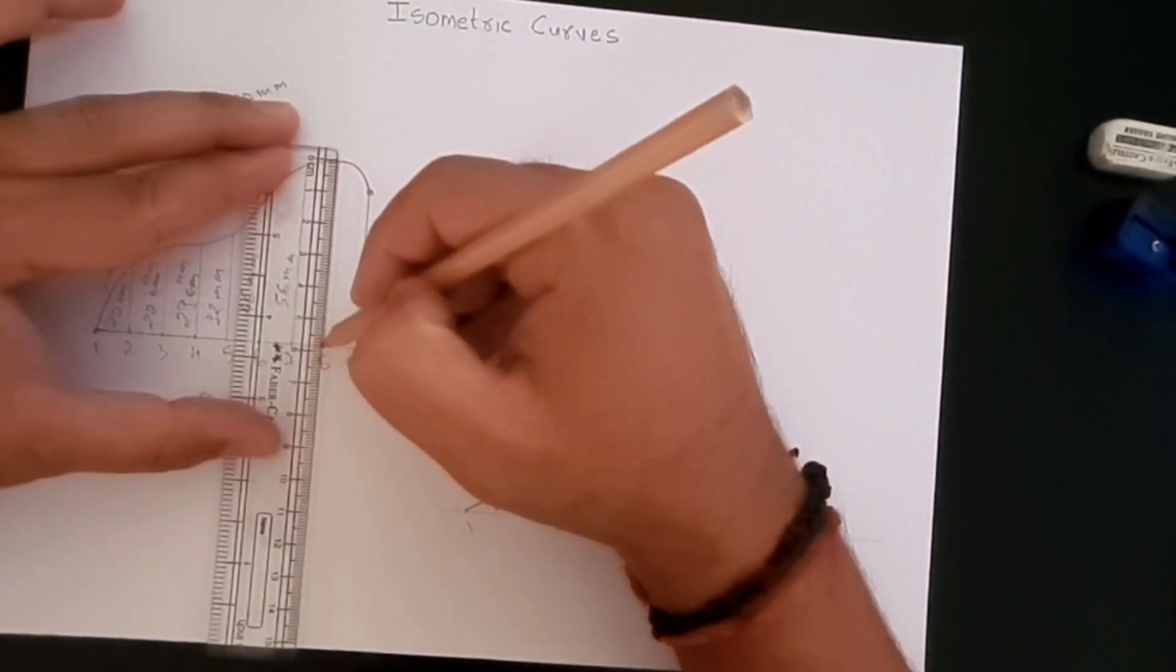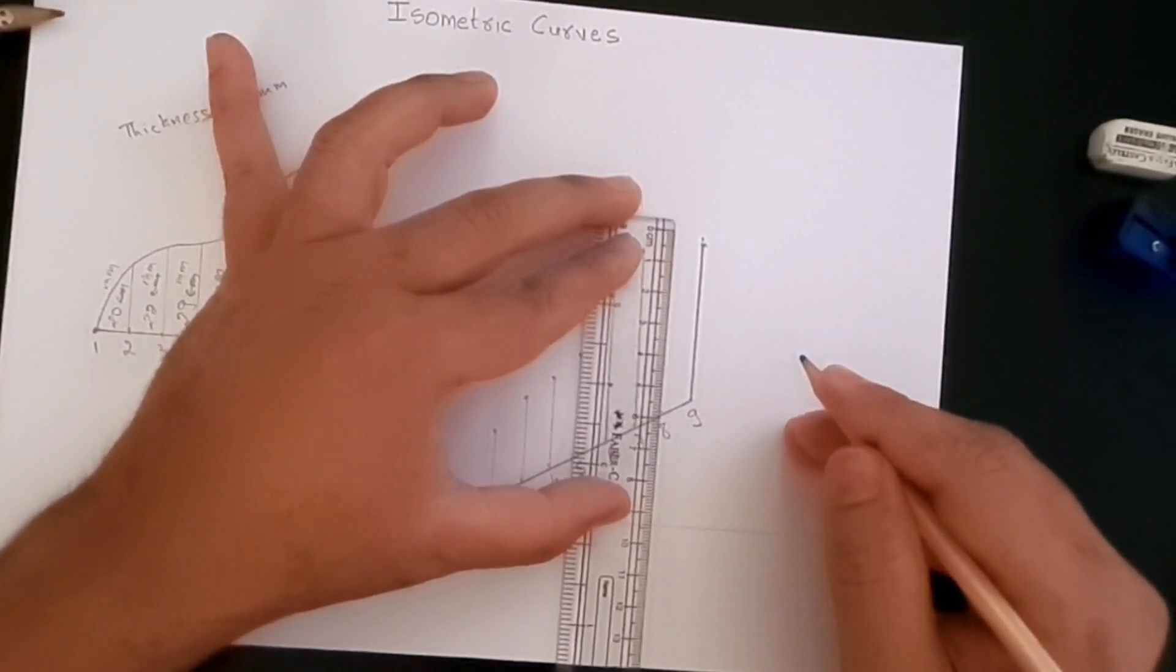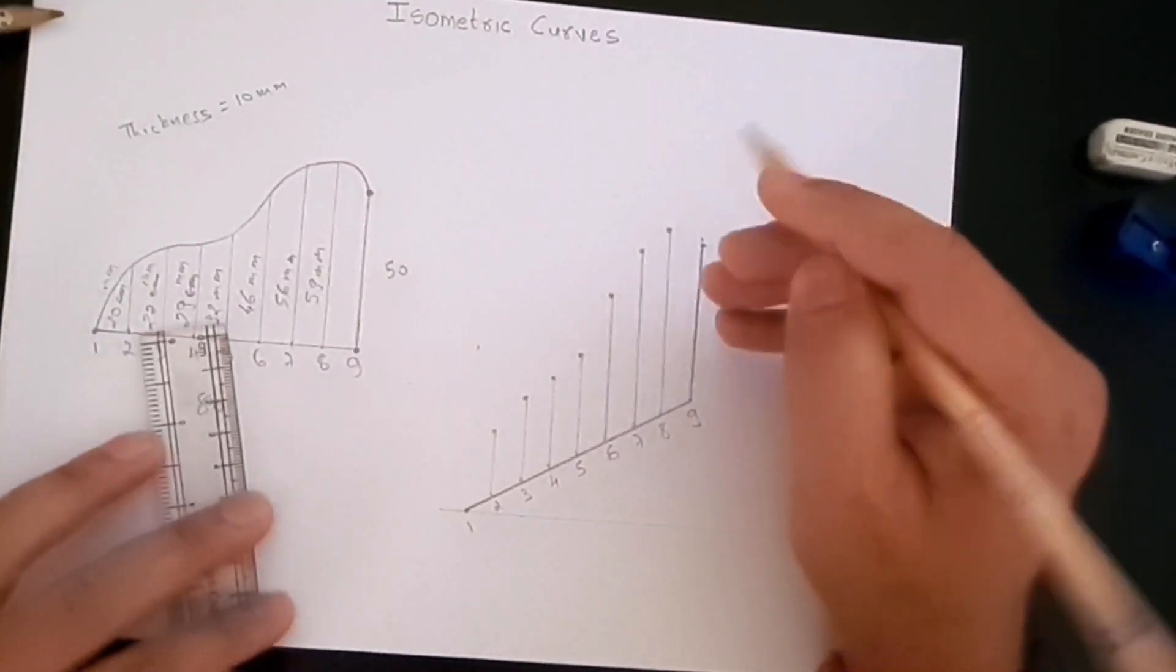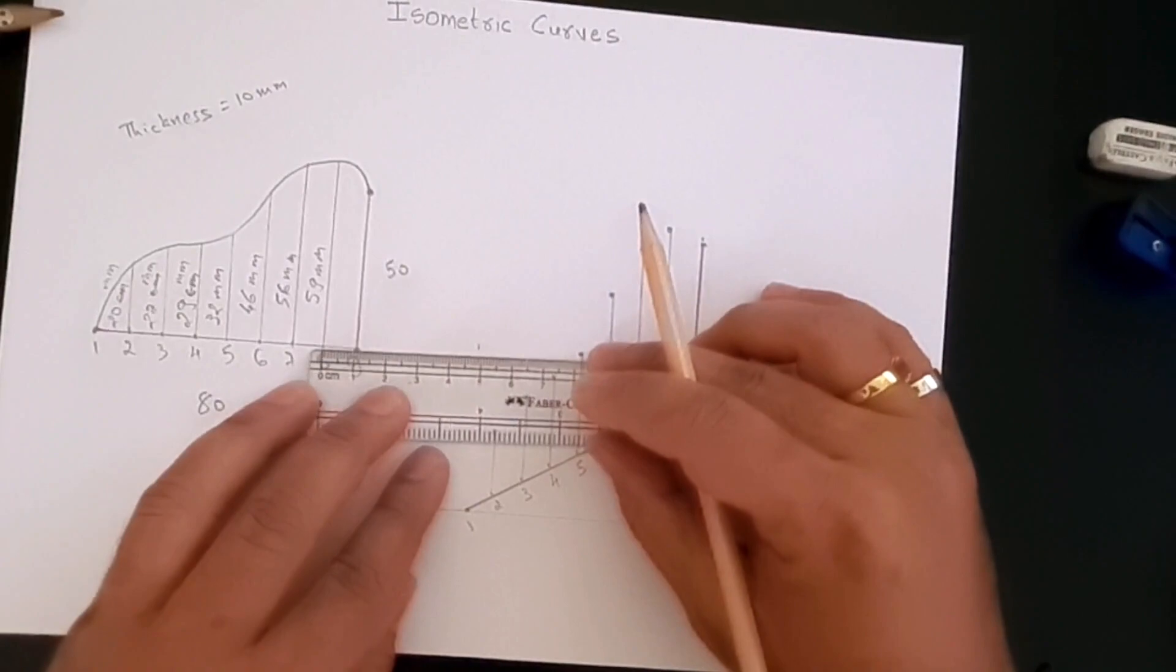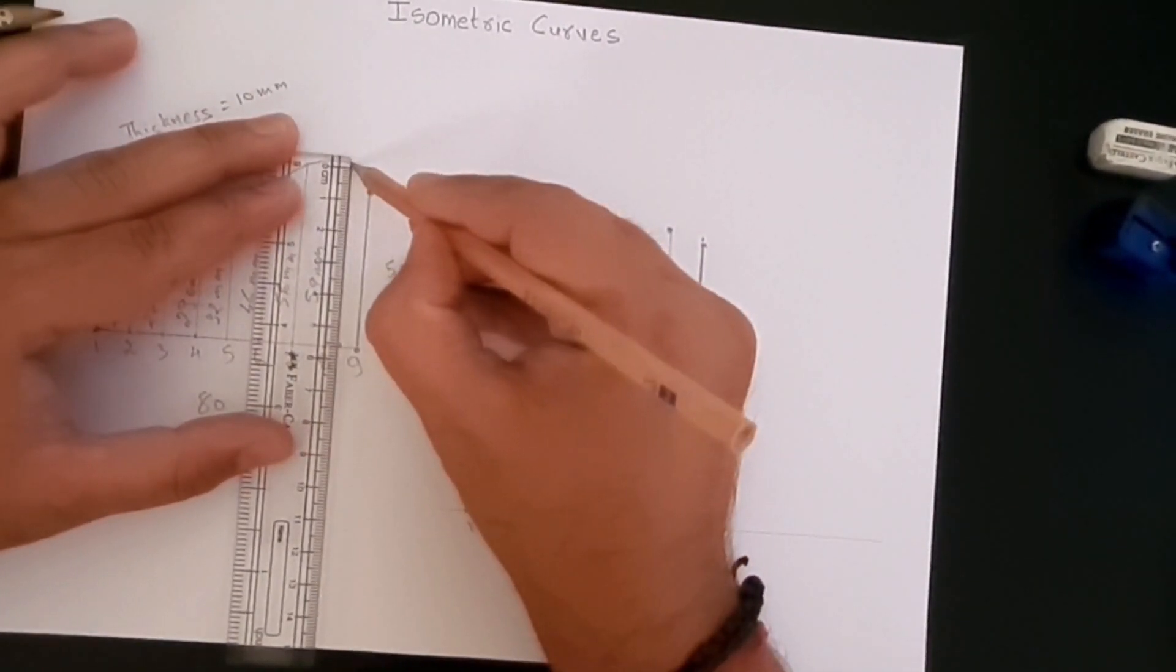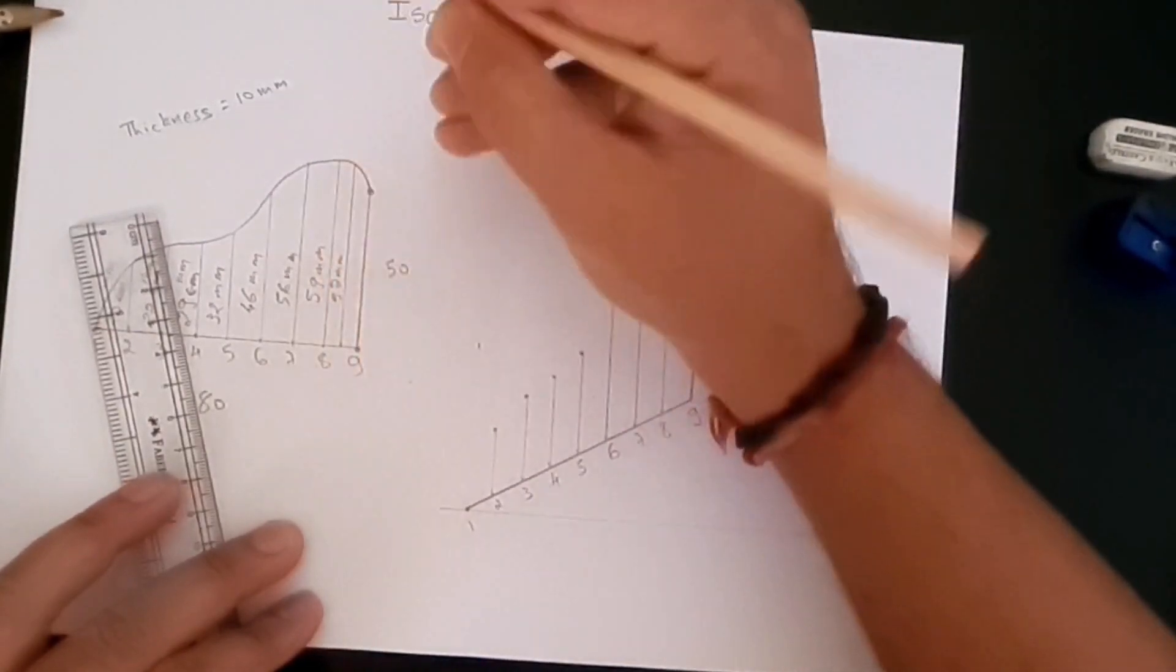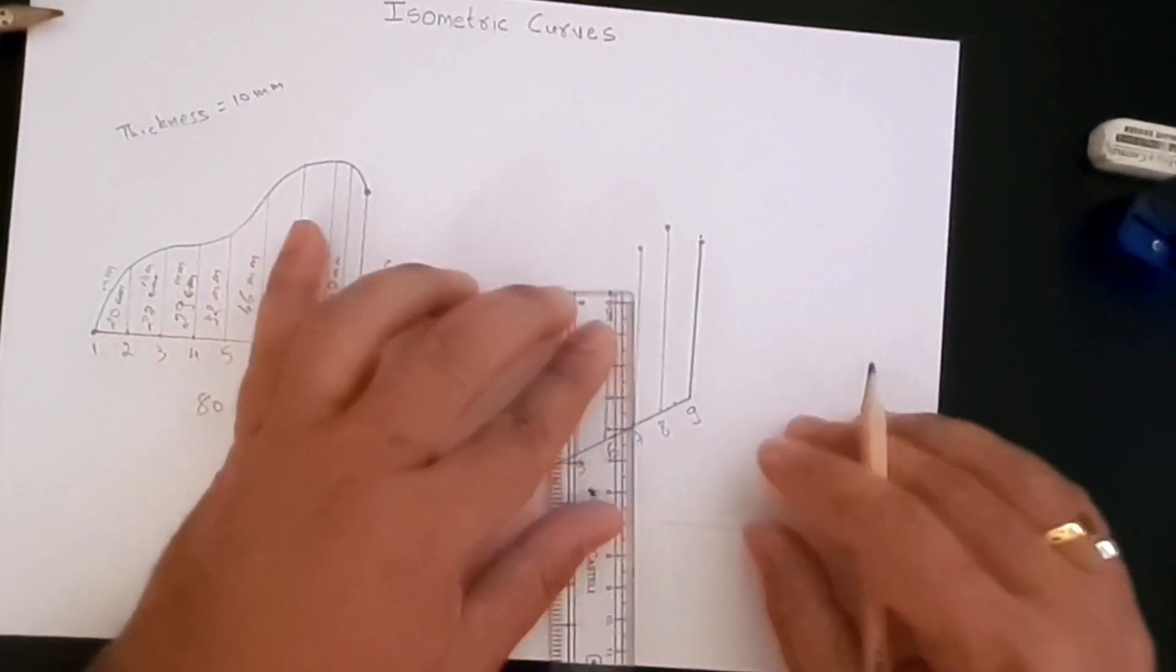So point number eight, let's create 59 millimeters. Now sometimes when the curve is very sharp, what I like to create is a center point and a height so that it gives me an easy reference for the curve. At this point here, midway between eight and nine, I create a point. The measurement of this point is 57, so between eight and nine, halfway, which is here, 57.